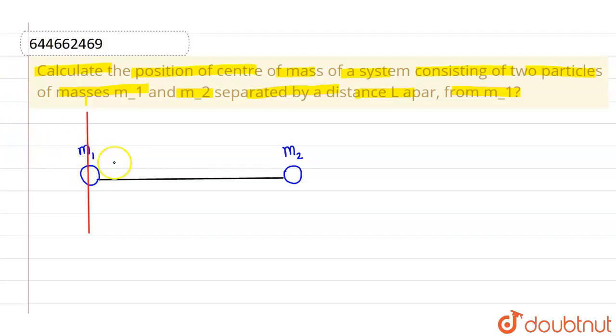Now we know that since these particles are lying on x-axis, the center of mass will also lie on x-axis. The position of center of mass is given by m1 x1 plus m2 x2 divided by total mass which is m1 plus m2.